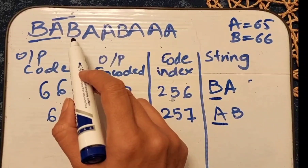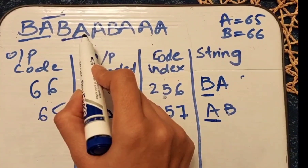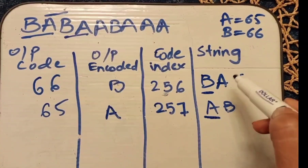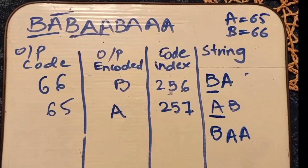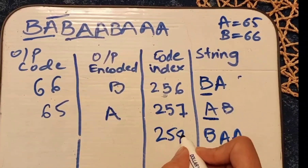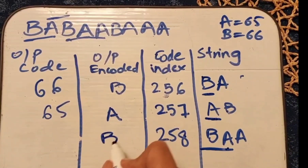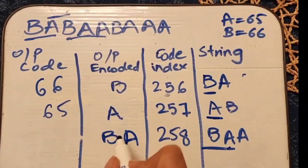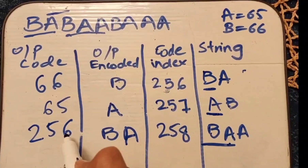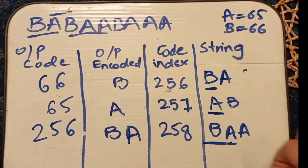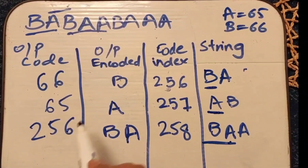The next substring starts from 'b'. Would we take 'ba'? No, because 'ba' is already present in our data entries table — every time we need a unique substring. So we take 'baa', increment the index by one to 258. The first element is 'ba', so the encoded output is 'ba' and the code for 'ba' is 256, taken from within the table, not the dictionary.